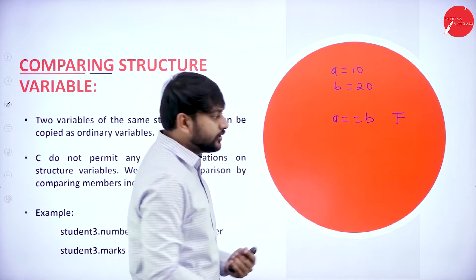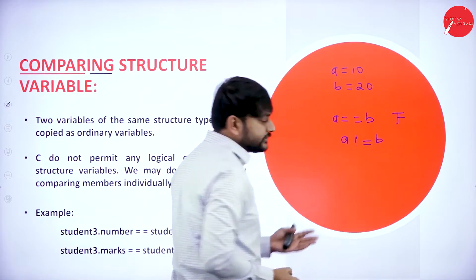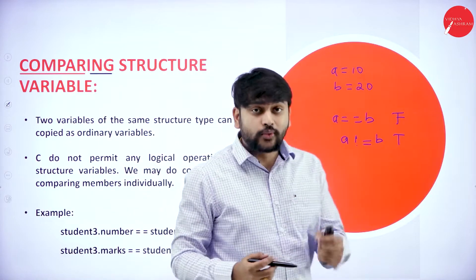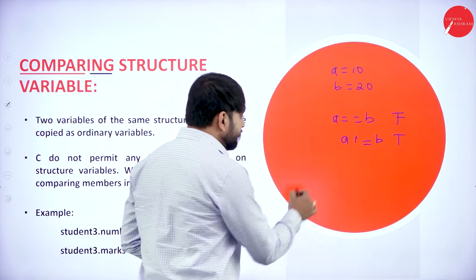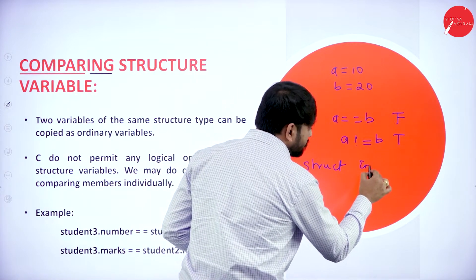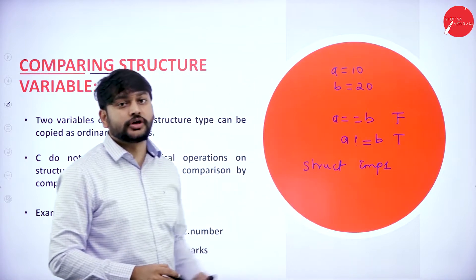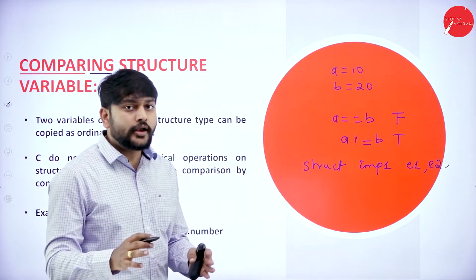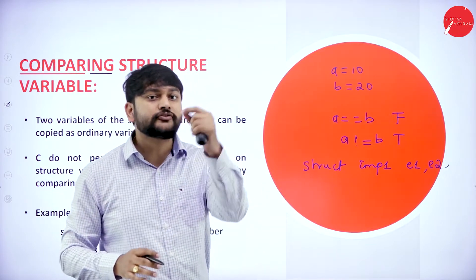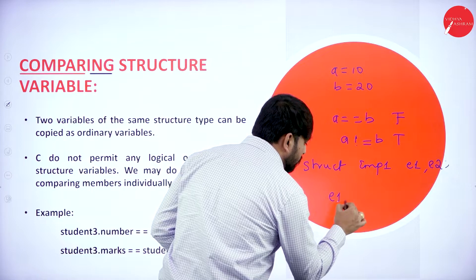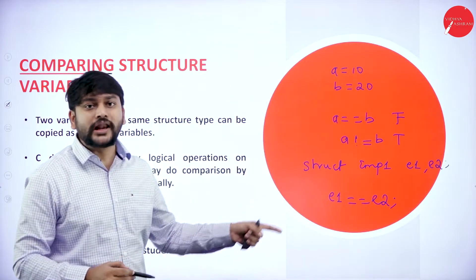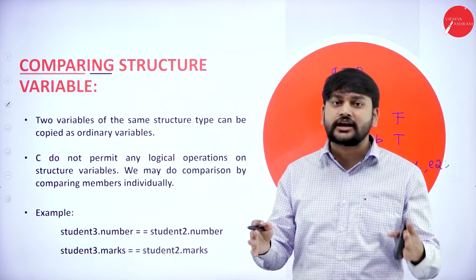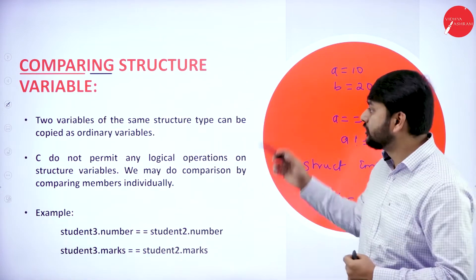In the same way, a != b — is that true? Yes it is true. Now let's take structure variables. Say I am creating a structure variable for employee: EMP1 is the name of the structure, and E1 and E2 are the structure variables. Can I compare them directly — E1 == E2? No. This is not a valid statement in C programming with respect to structure comparison.